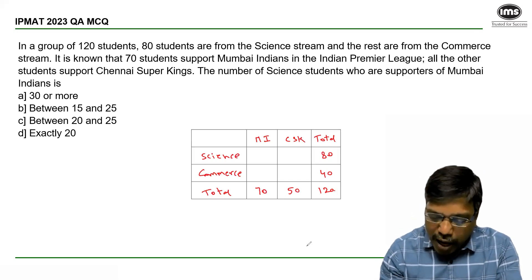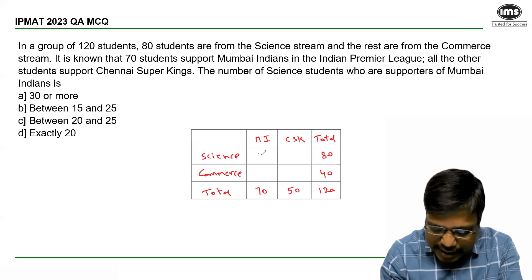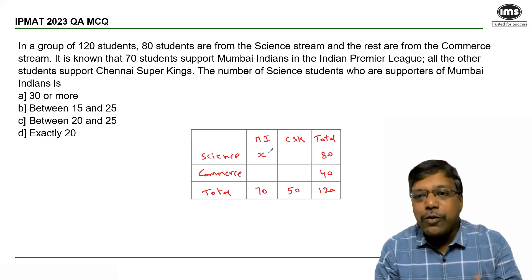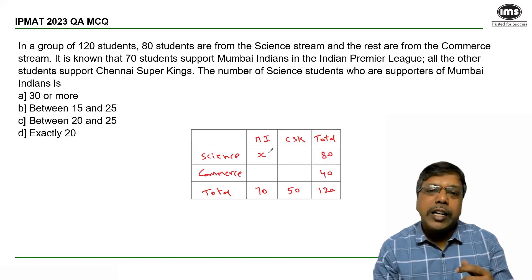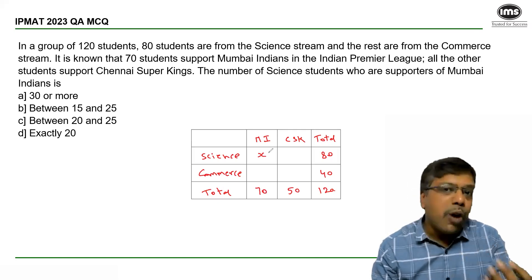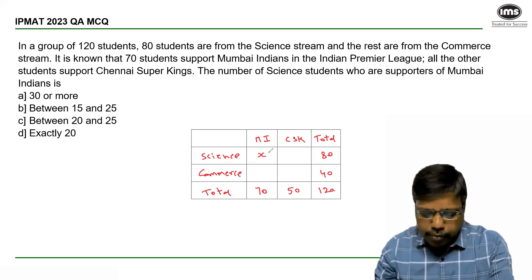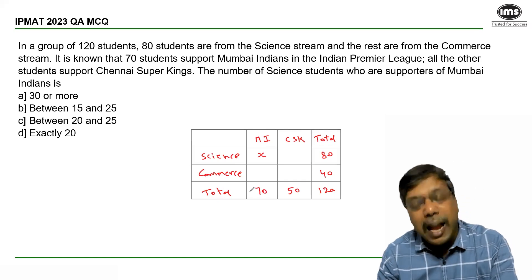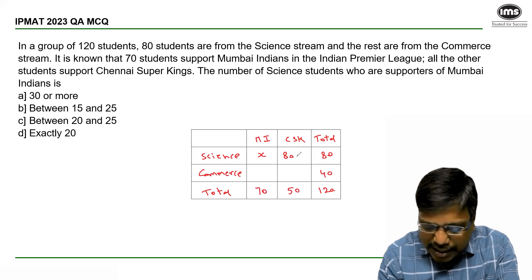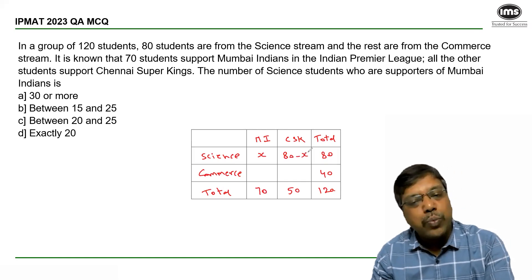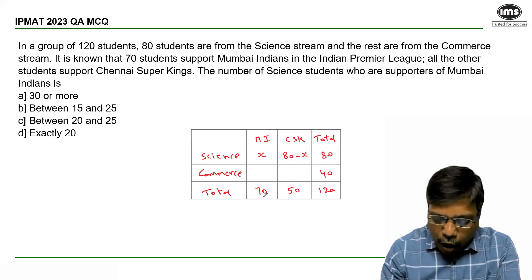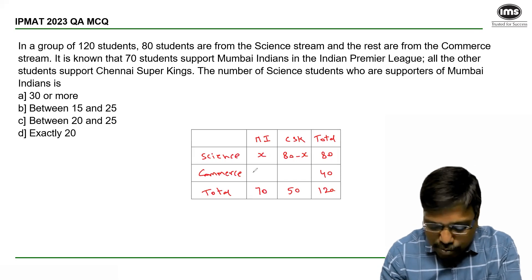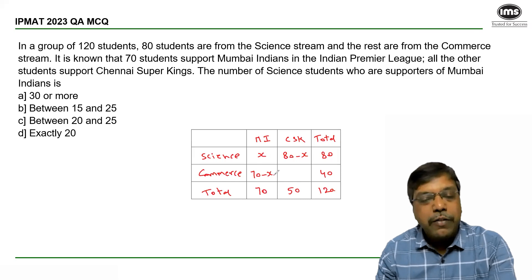The number of science students who are supporters of Mumbai Indians — let us say it is X. When I look at the answer options, I understand that it is not an exact value of X I need to calculate, but more in terms of how X behaves — what is the minimum, maximum, or the range of X. In science, there are 80 students total; if X students support Mumbai Indians, the remaining 80 minus X will support Chennai Super Kings. Out of 70 students who support Mumbai Indians, X are from science, so the remaining 70 minus X will be from commerce.